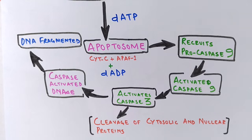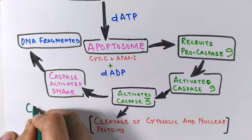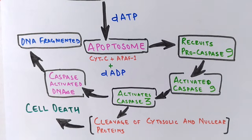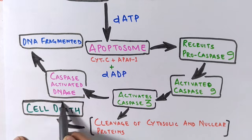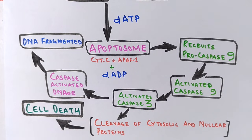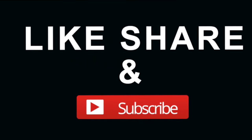Caspase 3 also cleaves cytosolic and nuclear proteins, which marks the death of the cell. Finally, there is phagocytosis of the residual material of the cell. This is how the intrinsic pathway kills the cell when an apoptotic signal is received within the cell. The extrinsic pathway will be covered in the next video. I hope you liked the video — if so, give it a thumbs up and make sure to subscribe. Thanks.